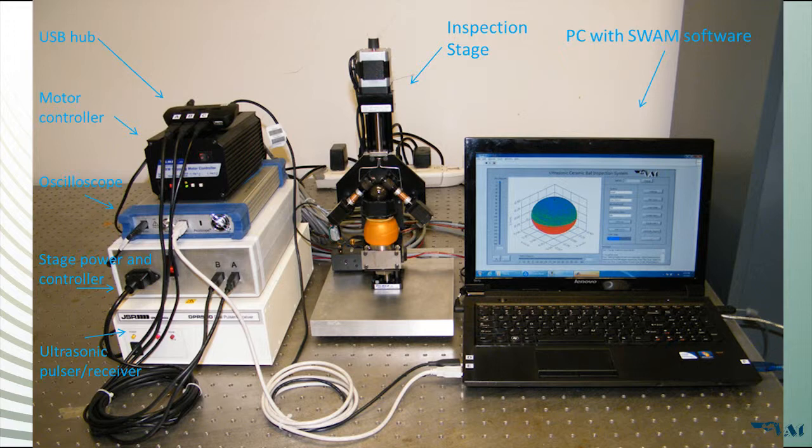The SWAM system includes a laptop computer with control software, a 3 degree of freedom DOF ball rotation and inspection stage, a power motor controller box, an ultrasonic single pulsar receiver, and a signal digitization oscilloscope.